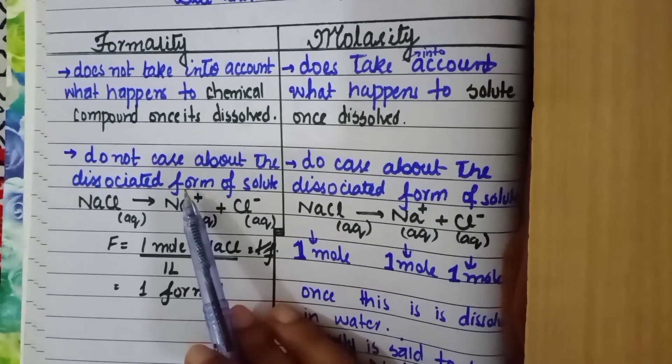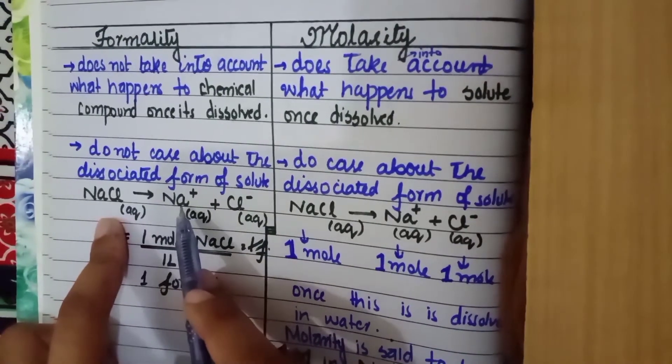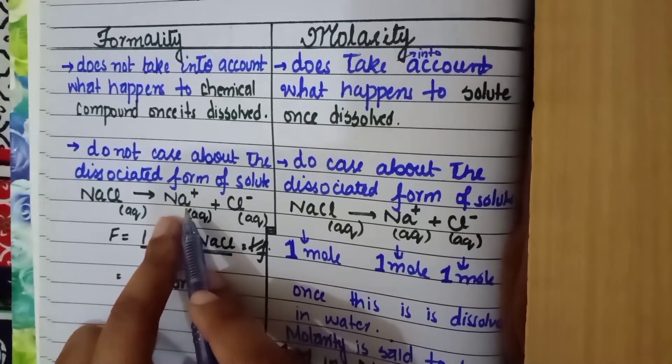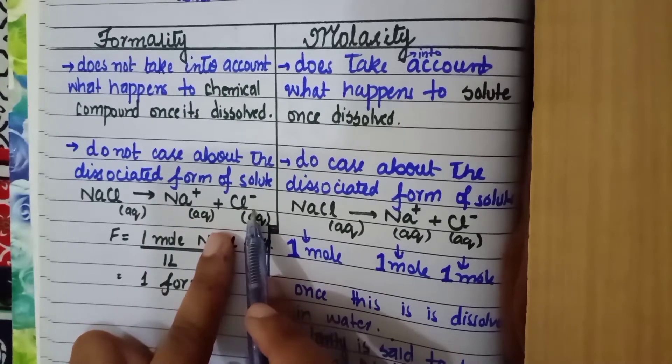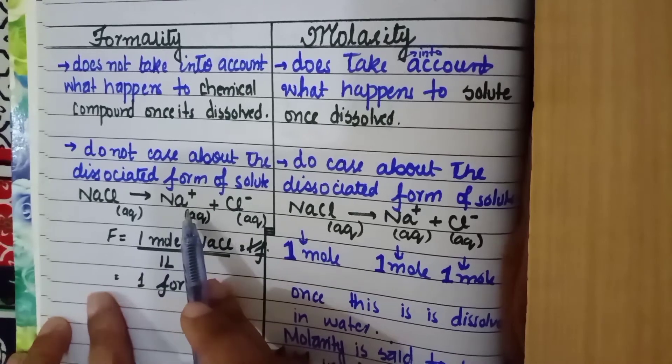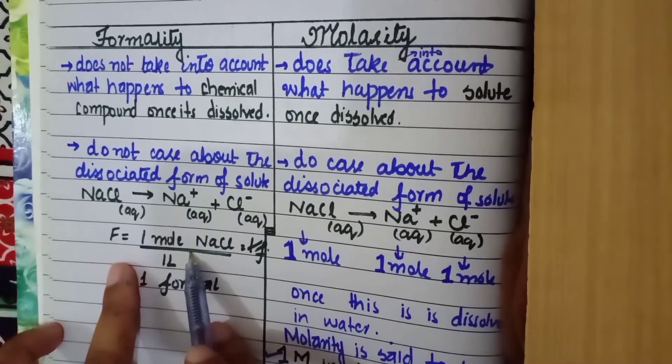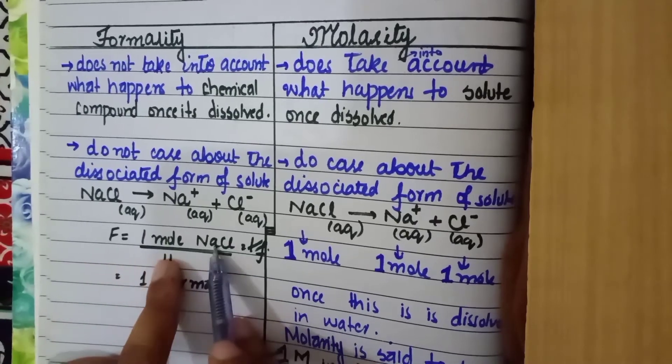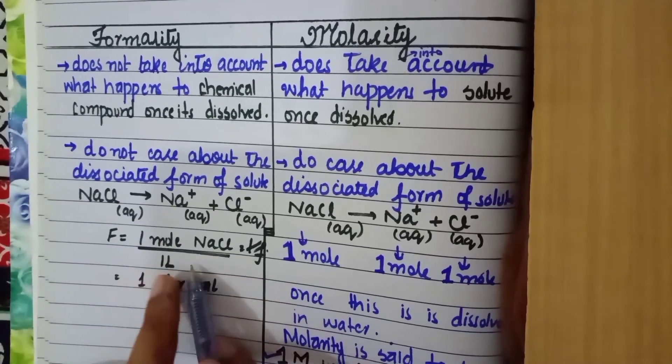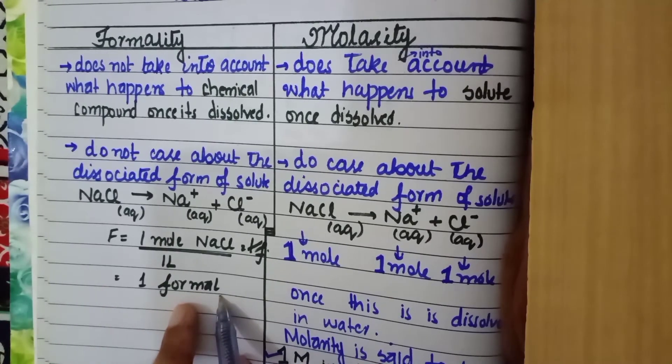It does not care about the dissociated form of solute. Technically, when NaCl is dissolved in water, it is dissociated into sodium ions and chloride ions, but formality has no consideration of the dissociation that has occurred with NaCl. It will still say that formality equals one mole of NaCl divided by one liter of solution, making a one formal solution.